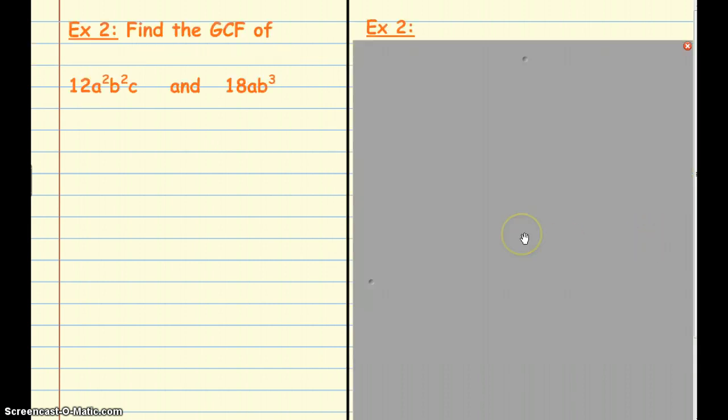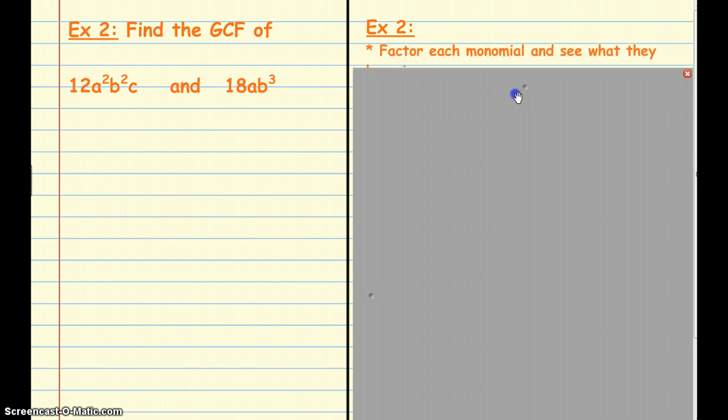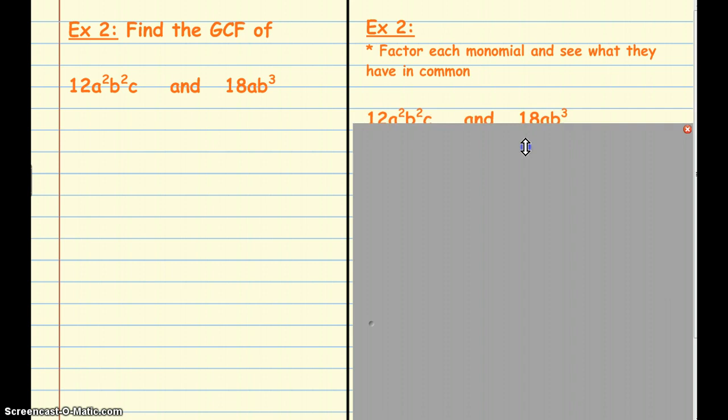Now let's take a look at example 2. We're going to find the GCF of 12a²b²c and 18ab³. Remember, we're finding the biggest thing, biggest factors that these two expressions have in common. So the first thing that we're going to do is factor each of them, and then again we're going to look to see what they have in common. So we're going to do the same thing we just did in problem number 1, and we're going to ask ourselves, how can we break 12, how can we break down 18?